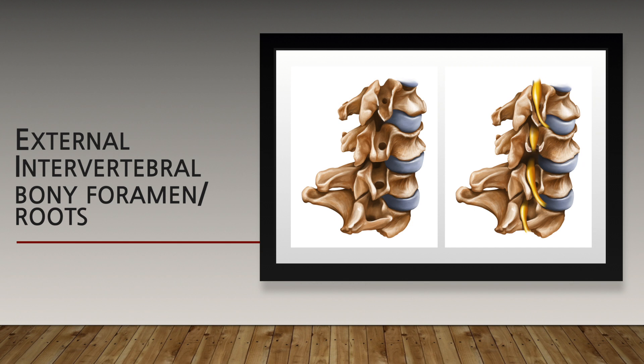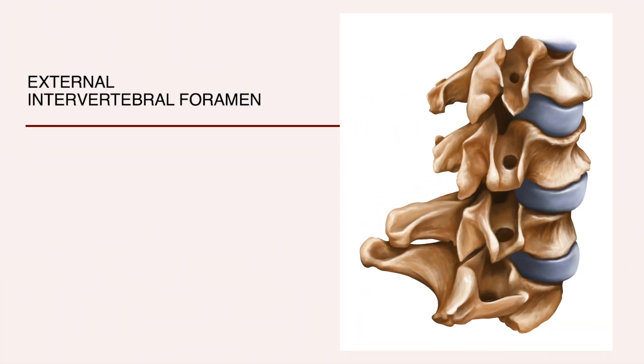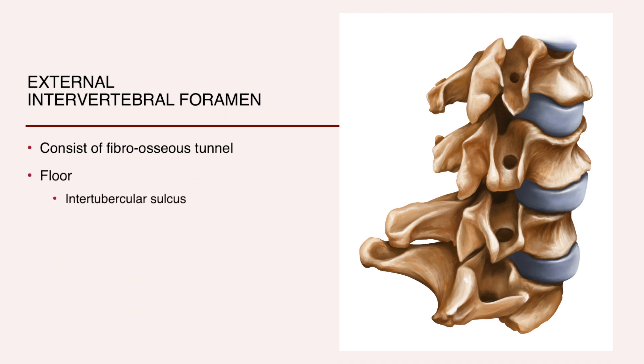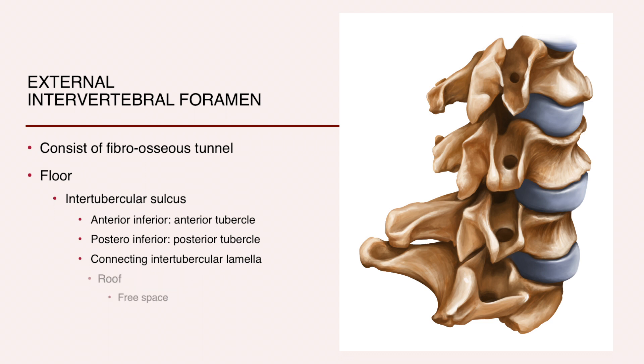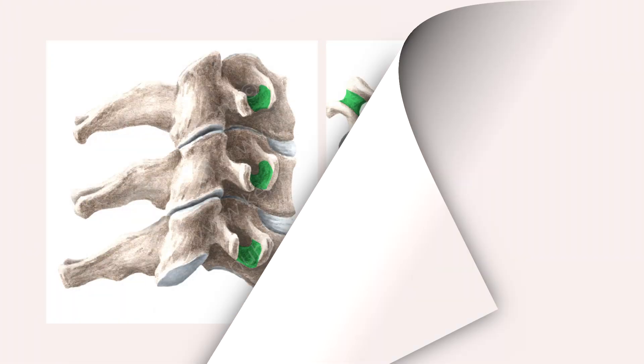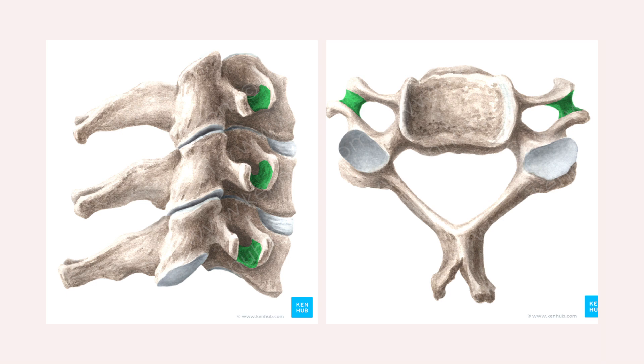The intervertebral foramen consists of internal and external intervertebral bony foramen. These drawings show the relationship between the bony foramen and nerve root. The nerve root sits on the floor and is covered with side bars. The external intervertebral foramen consists of a fibro-osseous tunnel. The floor is an intertubercular sulcus formed by the anterior tubercle, posterior tubercle, and intertubercular lamella. The roof is free space. The blue color indicates the intertubercular lamella.